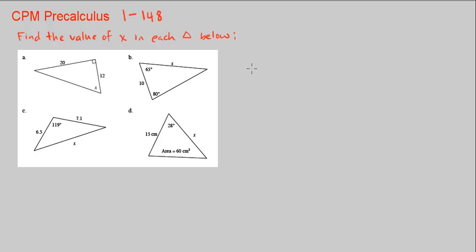This is CPM Pre-Calculus Chapter 1, number 1-48. Find the value of x in each triangle below. Let's look at part A. A's triangle is a right triangle, so immediately we know we can use SOHCAHTOA.